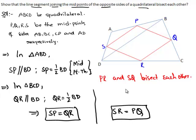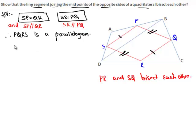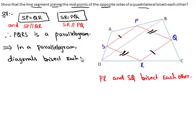Since the opposite sides of quadrilateral PQRS are equal and they are parallel, we can say that PQRS is a parallelogram. From the properties of a parallelogram, its diagonals bisect each other.